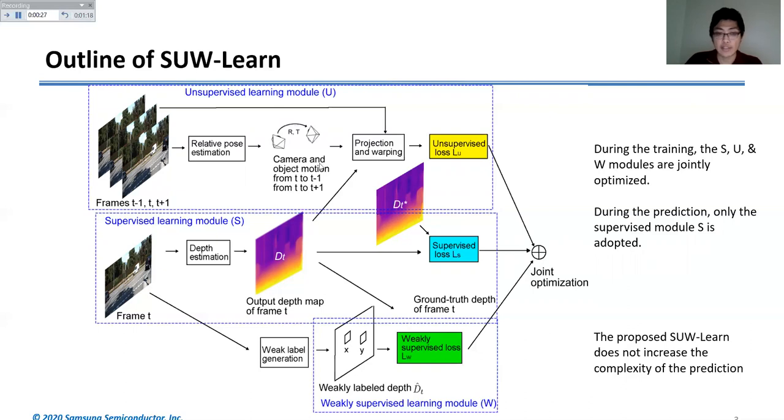In addition, we notice that the output depth map D_t, which is the output of the supervised learning module S, will be fed into the unsupervised learning U and weakly supervised learning W. That means the accuracy of D_t can be refined by optimizing the U and W modules.